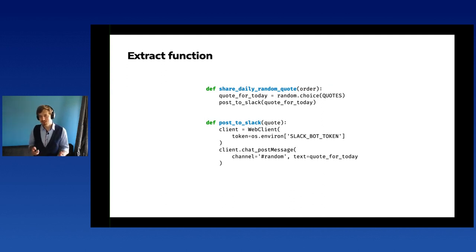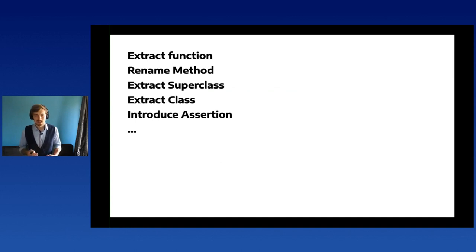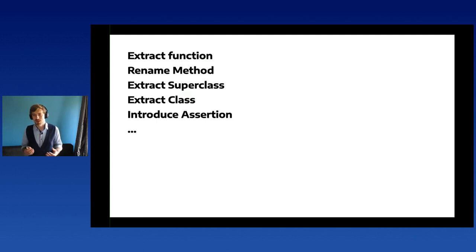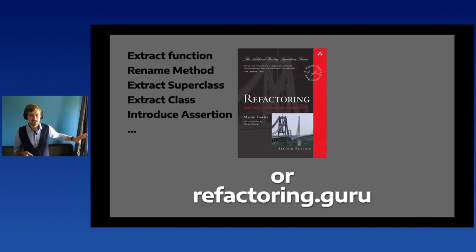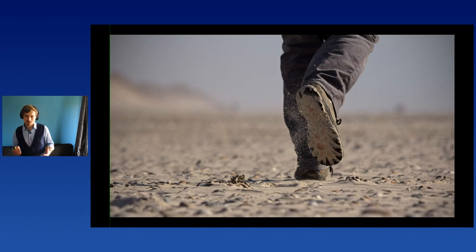There are dozens of such transformations already recognized. I assume you already know that, because this is an intermediate session — maybe you don't know all the names, but you've certainly used them before if you've ever rewritten some code. I won't be focusing on that. If you're looking for a reference guide, there is 'Refactoring' by Martin Fowler, or refactoring.guru, which is a catalog of these transformations.